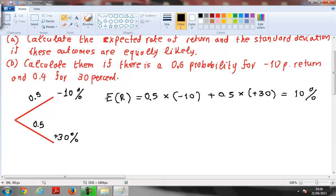So for the second case B, the expected rate of return for the second case, let's say it's E1, it's E2, will be 0.6 because this probability then will be 0.6 times minus 10 plus 0.4 for that probability times plus 30. It gives you 6%.